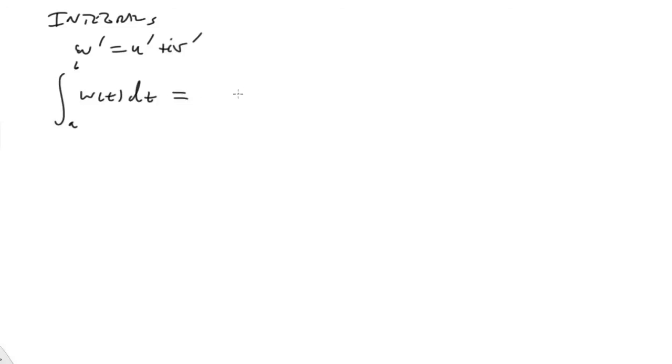Now let's talk about integrals. We can take derivatives — W-prime is simply u-prime plus i·v-prime. We can do the same thing with integrals: the integral from a to b of W(t) dt is just taking two real-valued integrals — the integral from a to b of U(t) dt, plus i times the integral from a to b of V(t) dt.